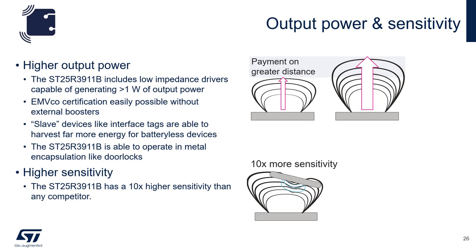The 3911B has high output power and sensitivity. The high output power is due to the low impedance drivers that are capable of generating more than one watt of output power. The benefit of this is EMVCO certification is possible without using an external booster. Higher output power also means that for standard tags the read range is increased, and for dynamic tags the tag has more energy to harvest so that it can power more devices. This increased output power also makes the 3911B a very viable candidate for working in metal encapsulation such as door locks.